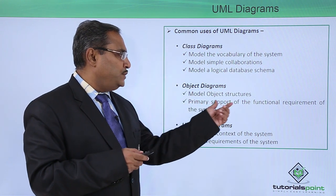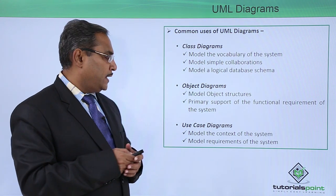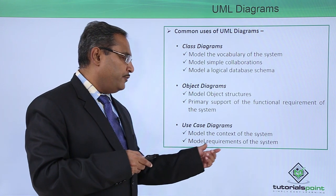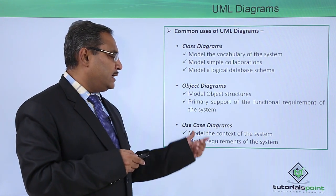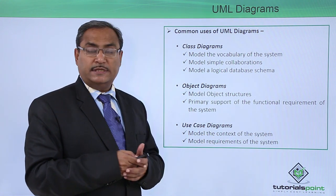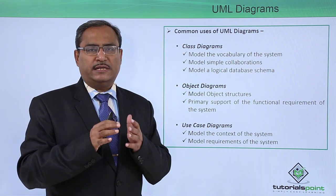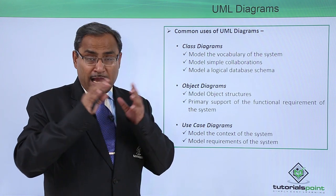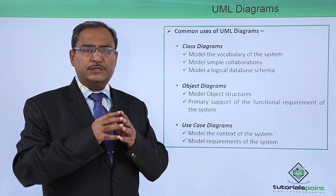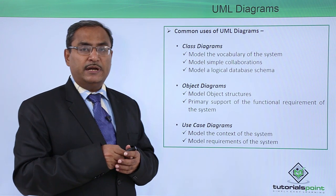Object diagrams are used to model object structures and provide primary support for the functional requirements of the system. Use case diagrams are used to model the context of the system and model the requirements of the system. Whenever drawing the first diagram, we usually go for the use case diagram because it gives a high-level view of the system. After gathering all the requirements from the client and users, those requirements get represented using the use case diagram.